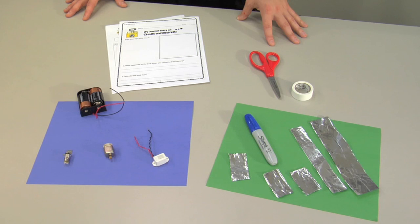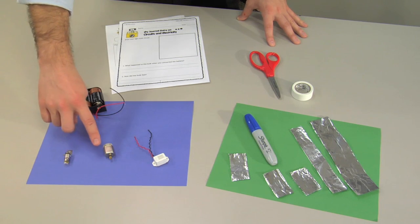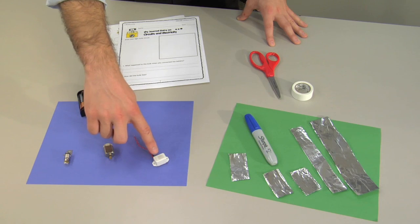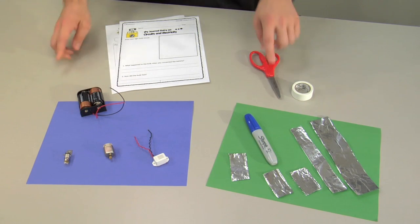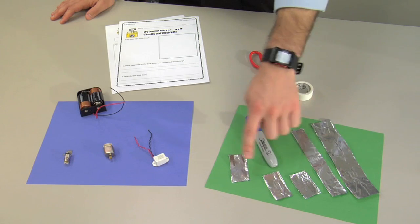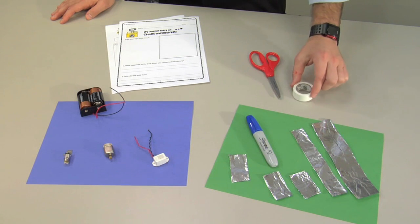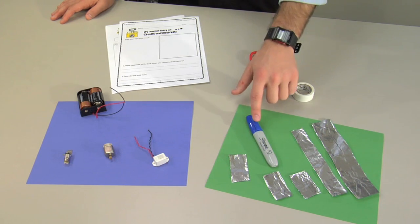Prepare the following items in advance for each group in your class: a light bulb, a hobby motor, a buzzer, two D batteries with battery holder, construction paper, aluminum foil strips, electrical tape, scissors, and a marker.